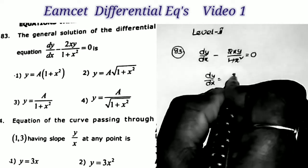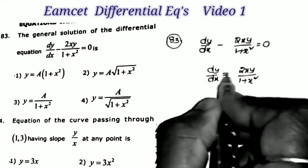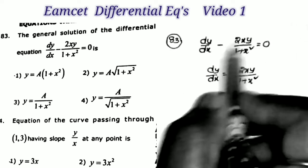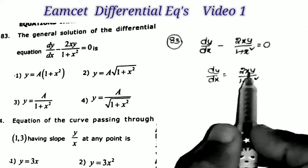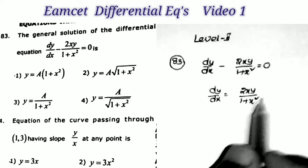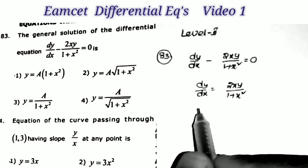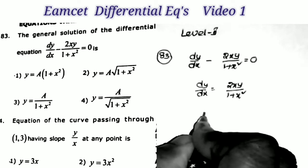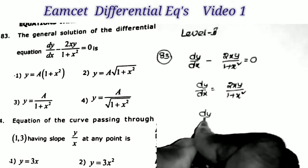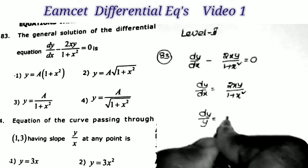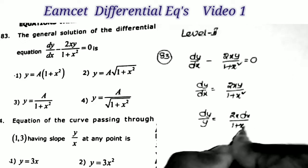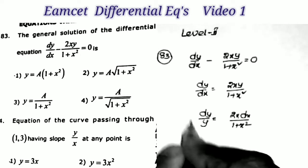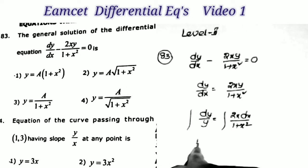We can see this is the variable separable method. First we write dy/dx = 2xy/(1+x²). We separate the variables by taking y terms on one side and x terms on the other: dy/y = 2x dx/(1+x²). Now taking the integration, integral of 1/y dy equals log y.